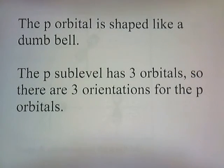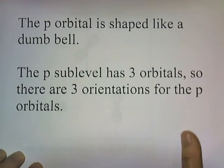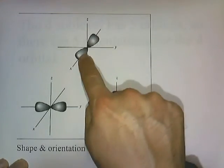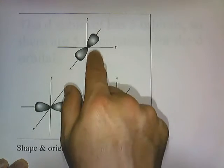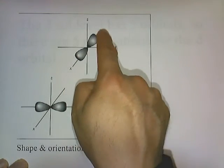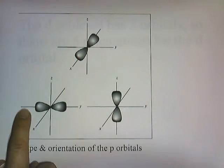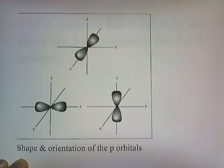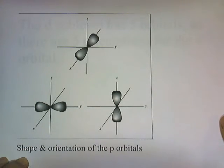The P orbital is shaped like a dumbbell. The P sublevel has three orbitals, so there are three orientations for the P orbitals. This shape can either be coming towards you, it can be left or right, or it can be up or down. So that's the shape and orientation of the P orbitals.